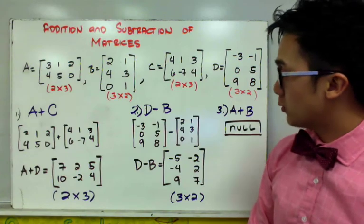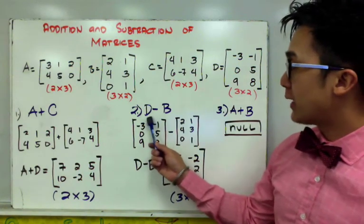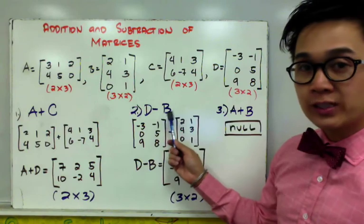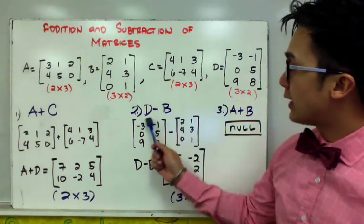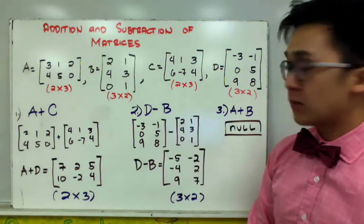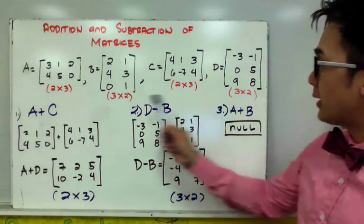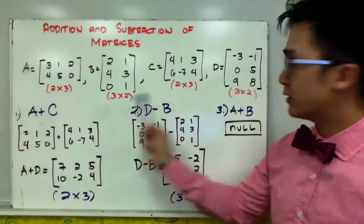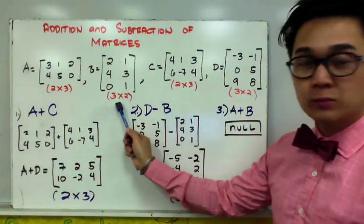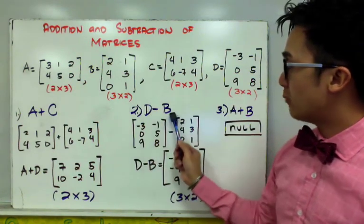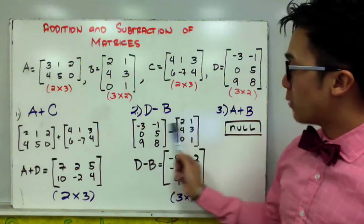So for number 2, if we're going to subtract matrix D and B, you need to first inspect if matrix D and B have the same order. So for matrix D, I have a 3 by 2 and B another 3 by 2. Since they have the same order, we can subtract matrix D and matrix B by their corresponding entries.